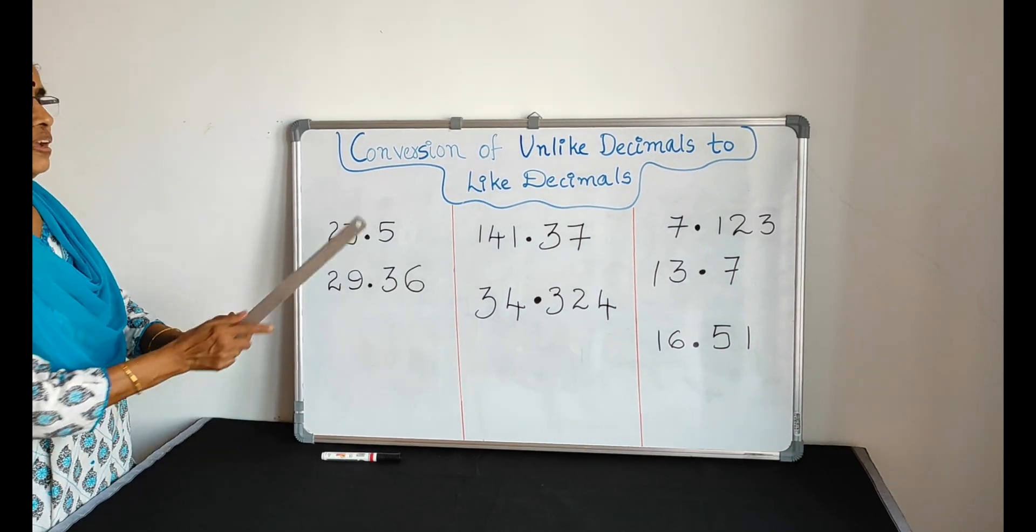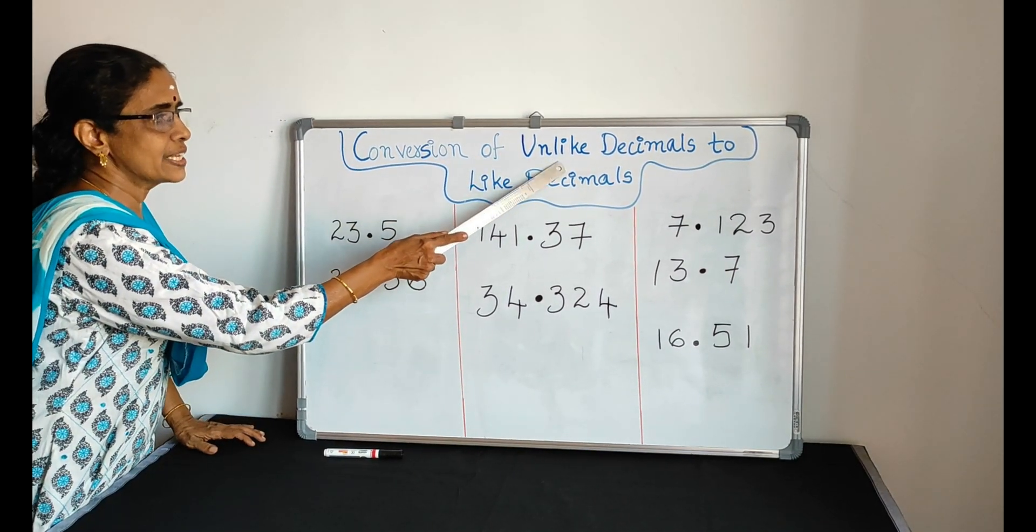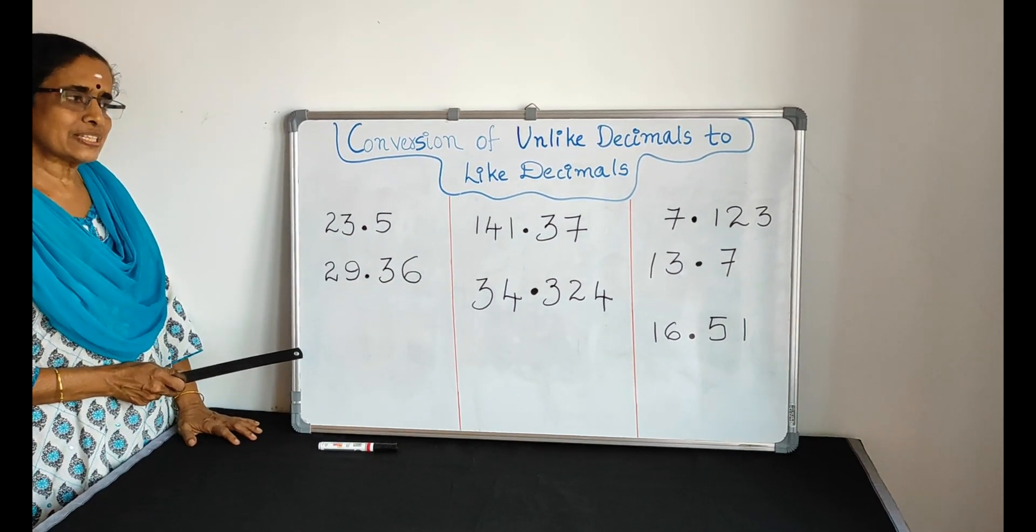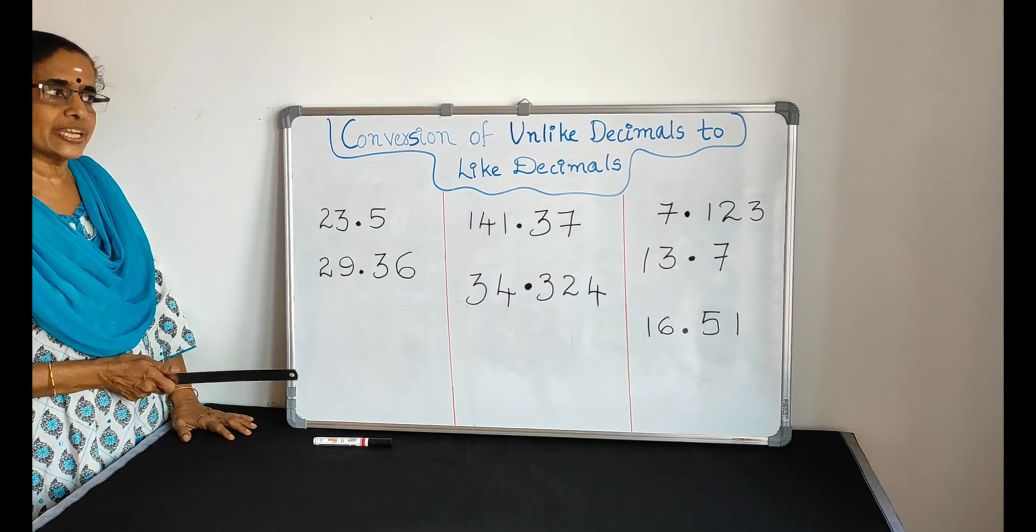Today's topic: conversion of unlike decimals to like decimals. What are like decimals? Can you identify two like decimals here?